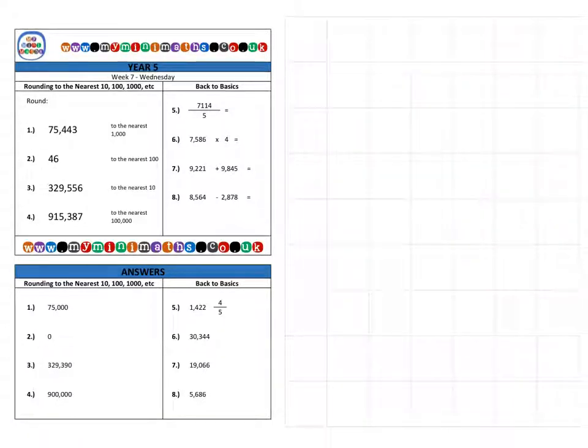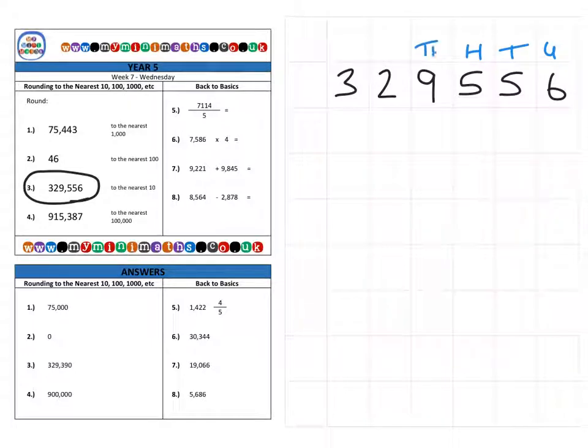Next, we're on to question 3, which is a larger number: 329,556. As before, we need to label the columns as units, tens, hundreds, thousands, ten thousands, and finally the last column, 100,000. I'm sure you've identified the importance of place value when rounding different numbers, especially these larger numbers. We're going to be rounding this number to the nearest 10.